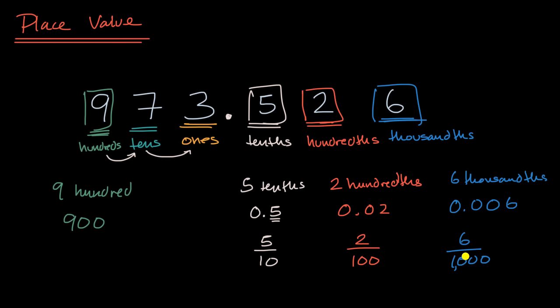So big picture, place value, we can keep going to the right of the decimal, and we can start representing things that are, I guess you could say, more precise.